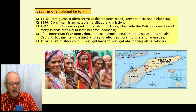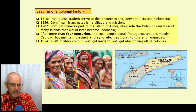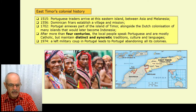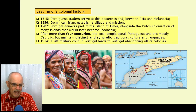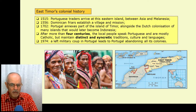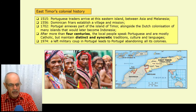Looking at East Timor's colonial history, Portuguese traders arrived back in the early 16th century at this island between Asia and Melanesia, looking to trade in spices and sandalwood. Soon after that, Dominican friars from Portugal established a village and a mission. It wasn't until the early 18th century that Portugal purported to annex part of the island of Timor, alongside the Dutch colonization of many of the other islands in that archipelago which would later become Indonesia.